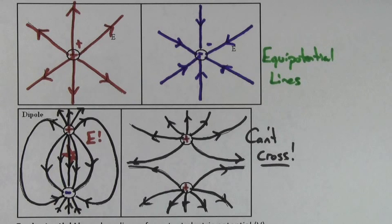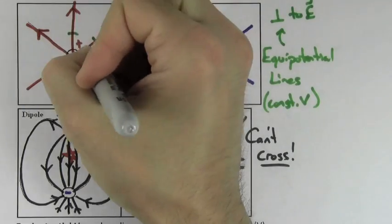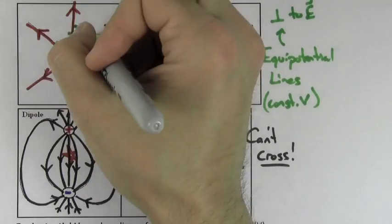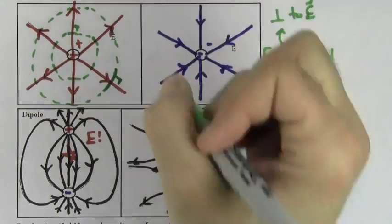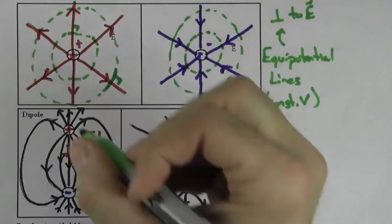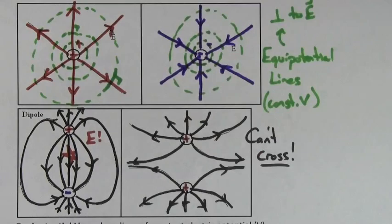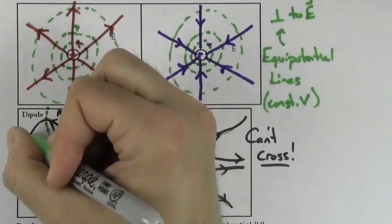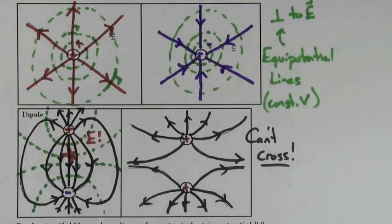Equipotential lines are lines through space where the V value — the electric potential — is constant along that line. Equipotential lines must always be perpendicular to the electric field lines in a region. Also, where the equipotential lines are most closely packed together, that's where the electric field is going to be greatest. And remember, the electric field lines always have to point toward lower V, or lower electric potential.